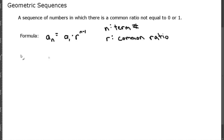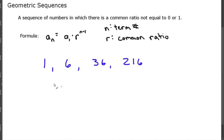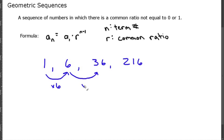Let's look at an example. Given the sequence 1, 6, 36, and 216, we know that to get from 1 to 6 we're multiplying by 6. Let's see if that's a pattern — to get from 6 to 36, we are also multiplying by 6.